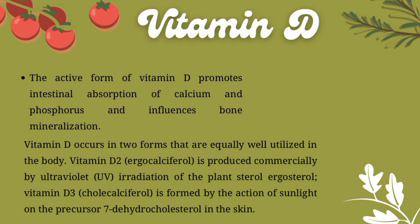Vitamin D occurs in two forms that are equally well utilized in the body. Vitamin D2 is produced commercially by ultraviolet irradiation of plants. Vitamin D3 is produced by the action of sunlight and is a very good natural source.